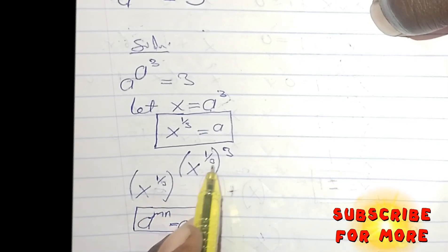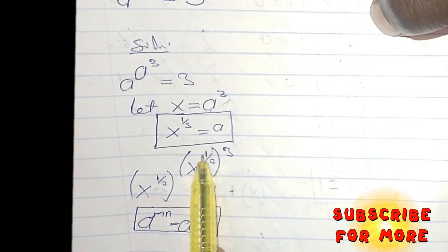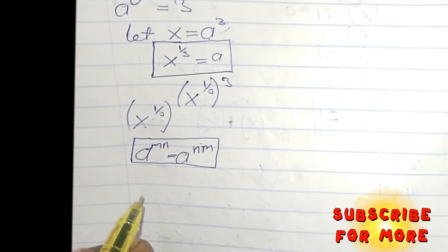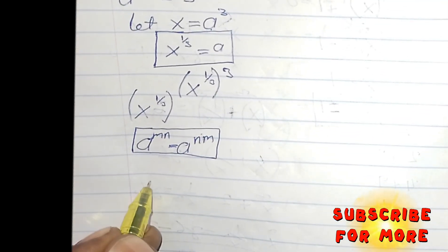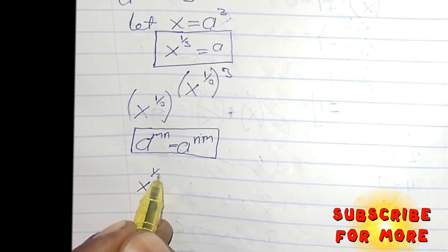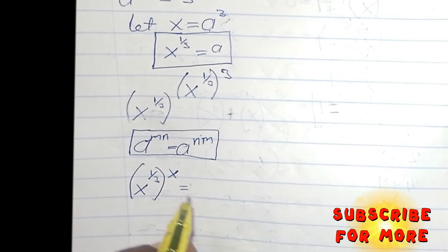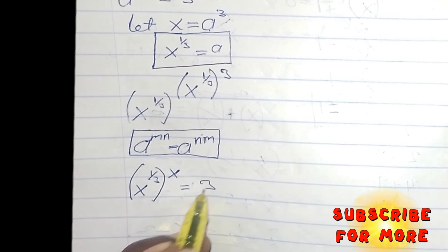That means I'm going to have X to an exponent of 1 over 3, raised to the power of 3 equals 3.